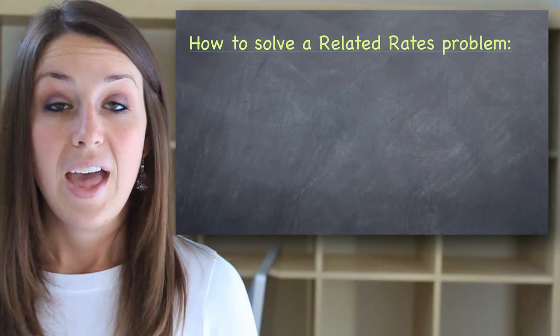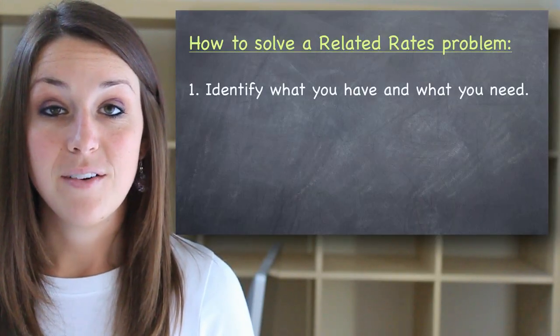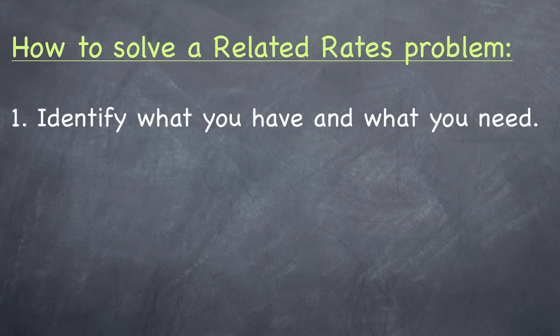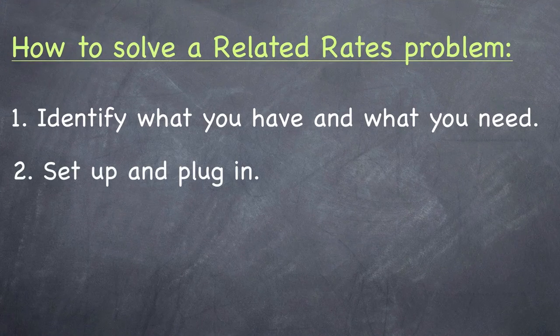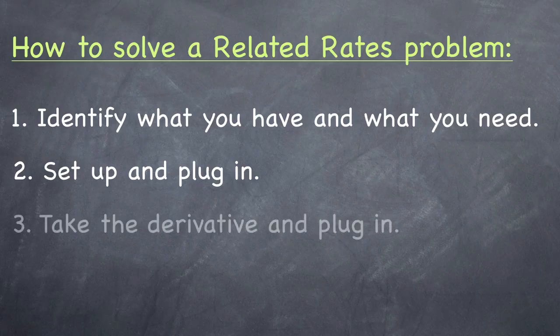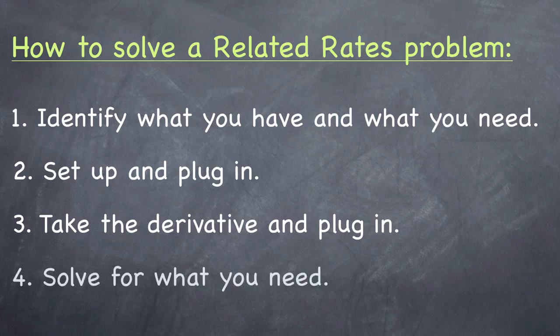Generally, your steps with related rates problems will be: 1. Identify the information you've been given and exactly what you need to find. 2. Set up your equation and plug in any variables that you can. Remember that you may need more than one equation. 3. Use implicit differentiation to find the derivative of your equation and plug in any remaining pieces of information such that your only remaining variable is the one you needed to find. 4. Solve for that variable.